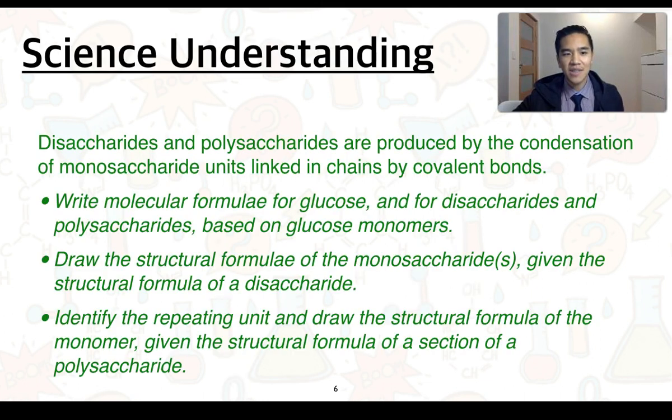This is our next science understanding. Disaccharides and polysaccharides are produced by the condensation of monosaccharide units linked in chains by covalent bonds. You'll need to know how to write molecular formula for glucose and for disaccharides and polysaccharides based on glucose monomers. Draw the structural formula of the monosaccharide, given the structural formula of a disaccharide, and identify the repeating unit and draw the structural formula of the monomer, given the structural formula of a section of a polysaccharide.